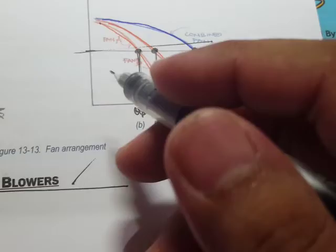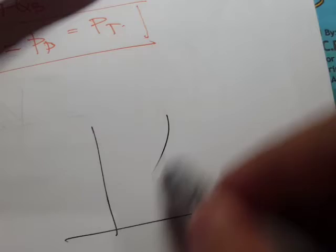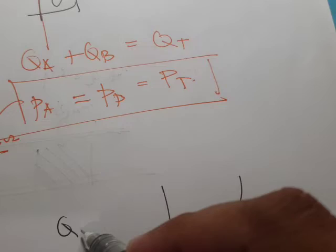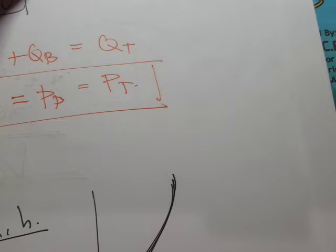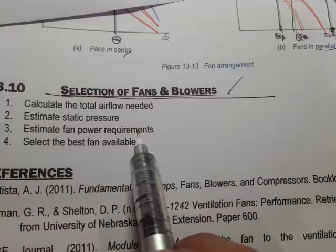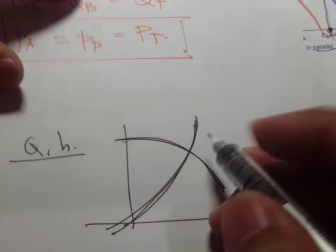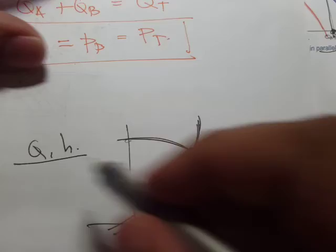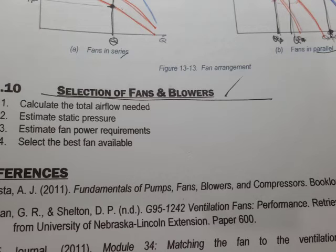For fan selection: first, compute the total required air flow rate and the required static pressure from the system resistance. Then estimate the fan power requirements. Finally, consult fan catalogs, performance curves, or performance tables to select the most appropriate fan. That concludes our topics on fans and blowers. The next topic will be pumps.